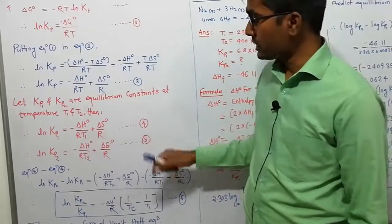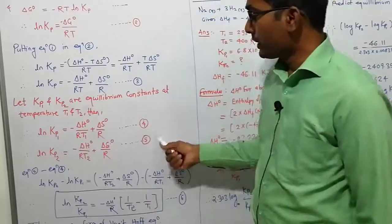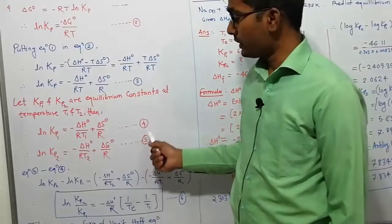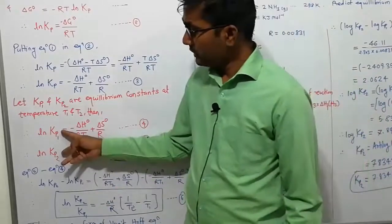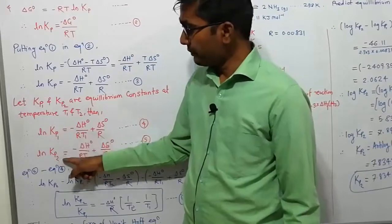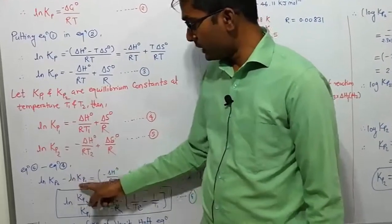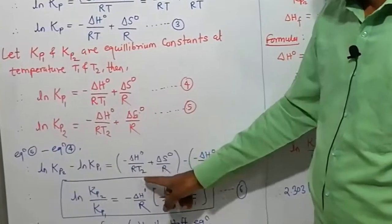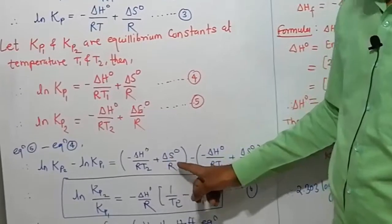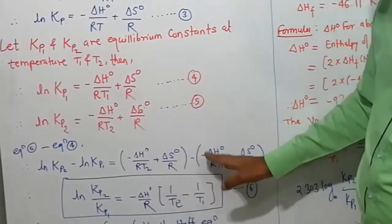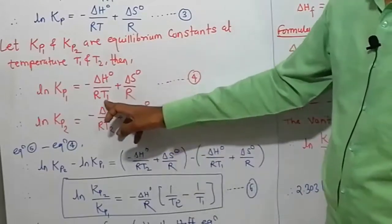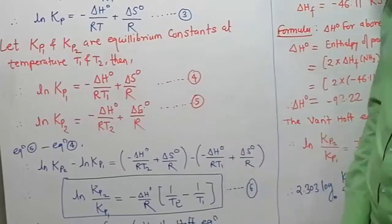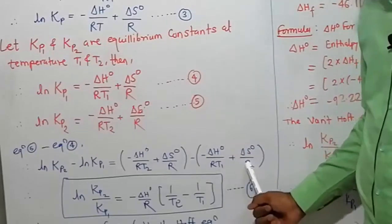We have these two equations, equation 4 and equation 5. Now let us subtract equation 4 from equation 5. We get ln Kp2 − ln Kp1 = (−ΔH⁰/RT2 + ΔS⁰/R) − (−ΔH⁰/RT1 + ΔS⁰/R).